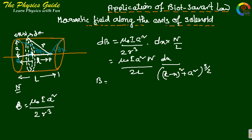So we take integration. B equals mu0 I A squared N by 2L, integration from 0 to L, because total length equals capital L, 0 to L, dx by L minus X squared plus A squared to the power 3 by 2.